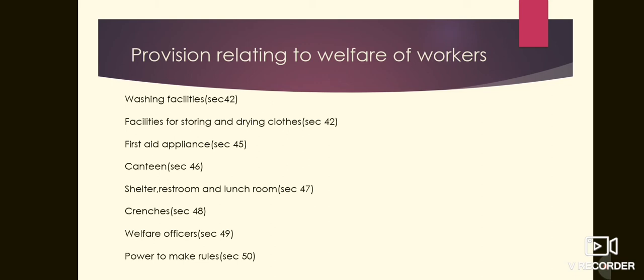Next is first aid appliances, covered in session 45. For every 150 workers, a minimum of one fully equipped first aid box shall be kept available during all working hours. So if there are 300 employees, at least two boxes should be there.